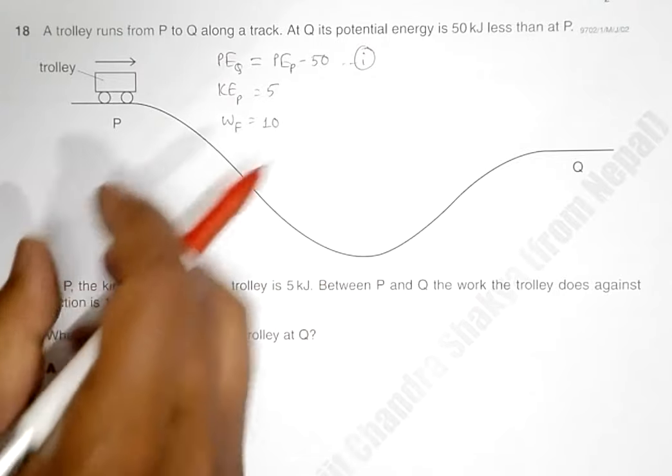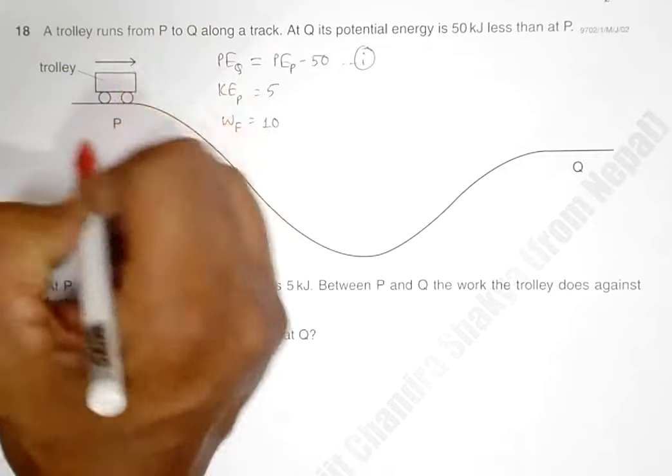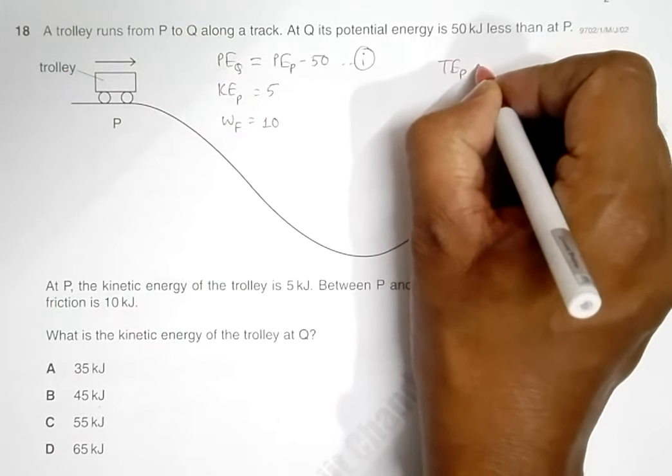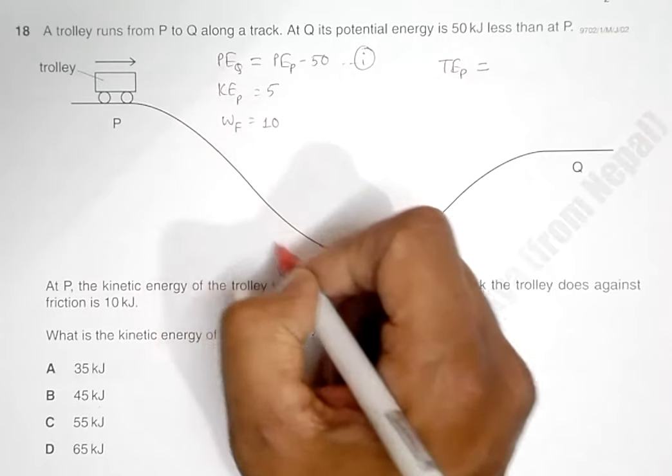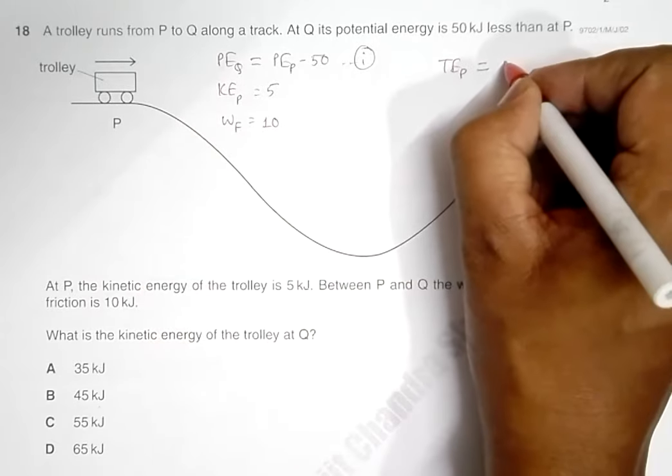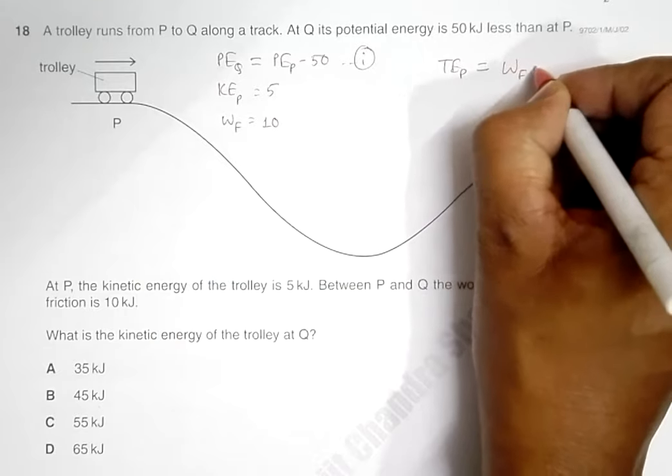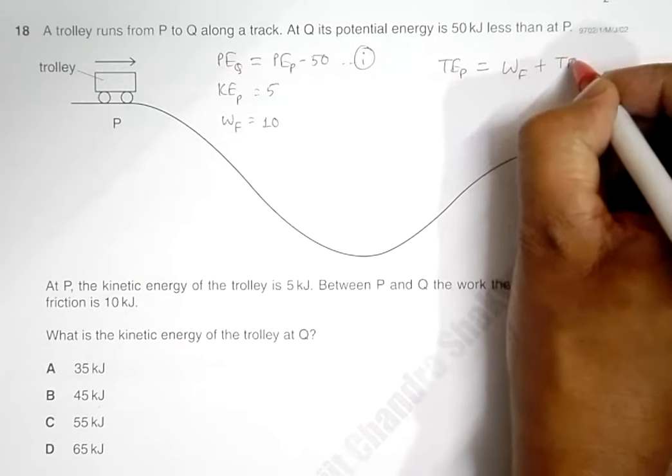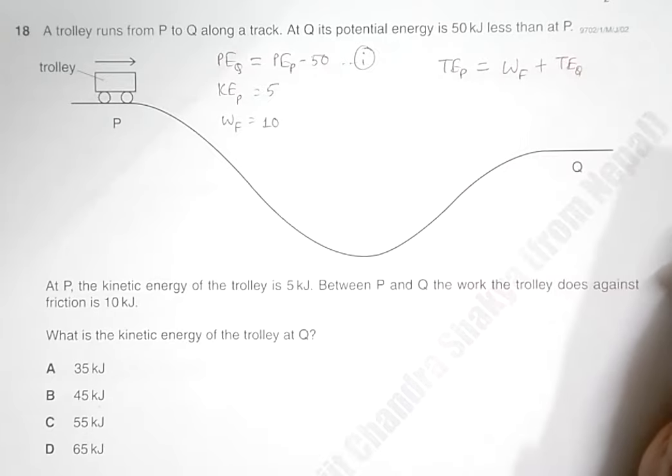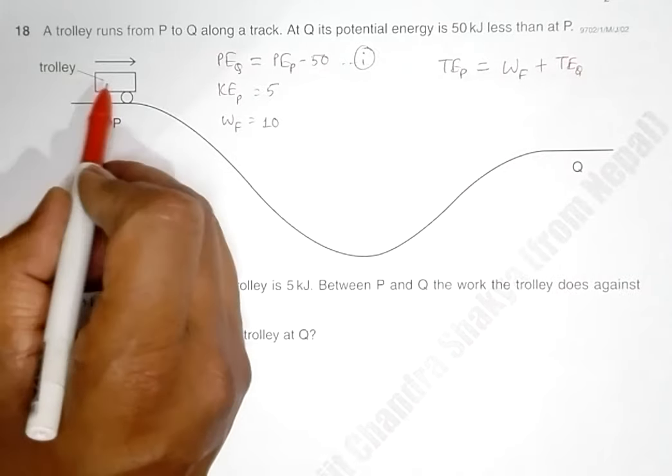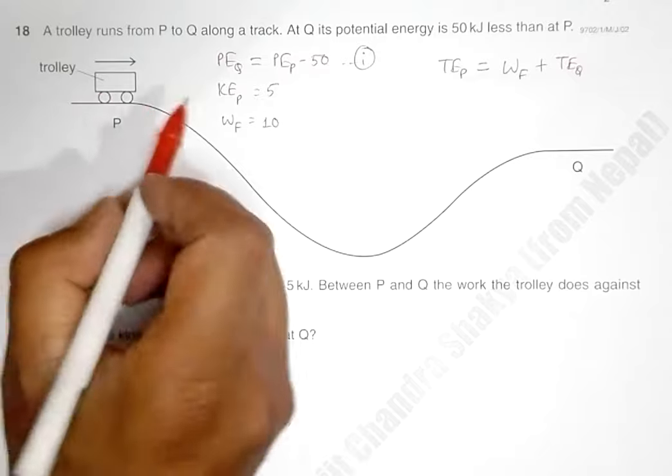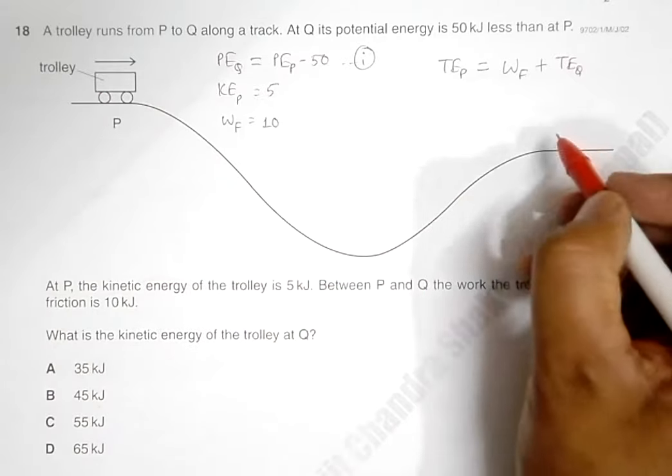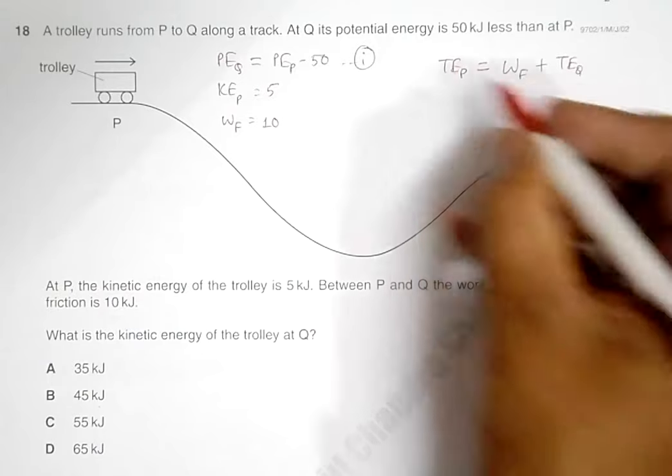One is to overcome the friction, so work needs to be done against friction, plus one is the total energy remaining here. So the total energy at Q. The total energy at P is utilized for two purposes: one is in overcoming the frictional force and the other is the total energy remaining here.